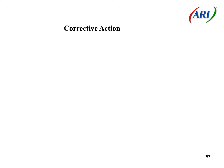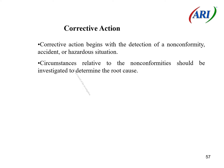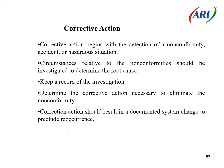Corrective action begins with the detection of a nonconformity, accident, or hazardous situation. Circumstances relative to the nonconformities should be investigated to determine the root cause. Keep a record of the investigation. Determine the corrective action necessary to eliminate the nonconformity. Corrective action should result in a documented system change to preclude reoccurrence. Implement the change.